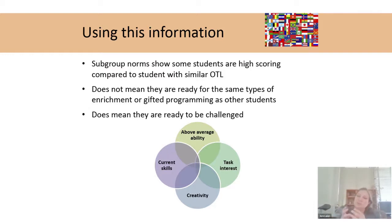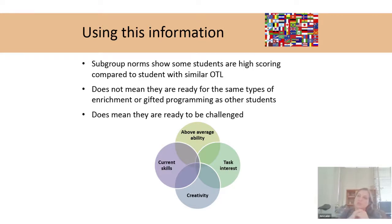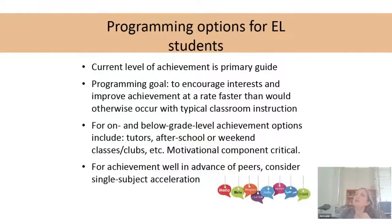Think about the student holistically — they have above-average ability, so what's their current skill level? What's their task interest and their creativity? All these things can combine to help you plan instruction in addition to ability information. Current achievement level needs to be your primary guide. They're not ready for an accelerated ELA program if they're still acquiring English, but they may be ready for accelerated ESL or enrichment in the regular classroom to keep them from getting bored.